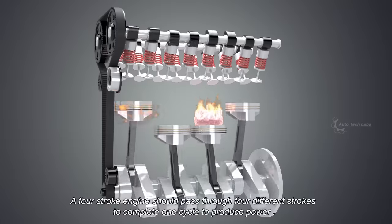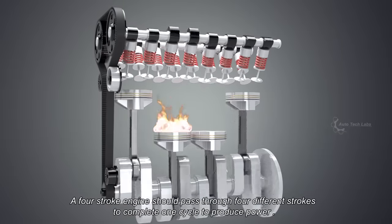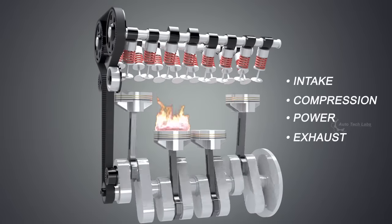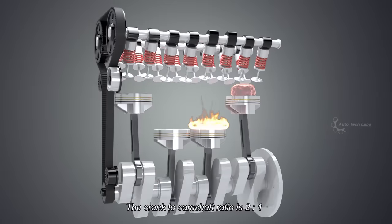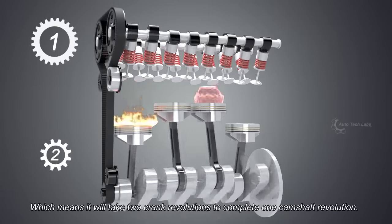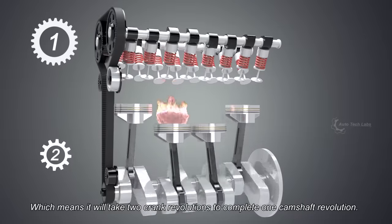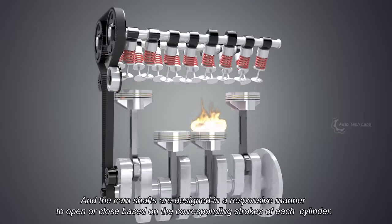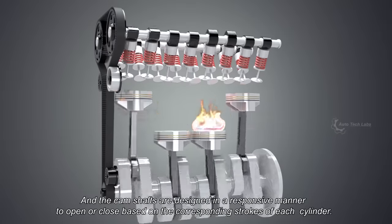A 4-stroke engine should pass through 4 different strokes to complete 1 cycle to produce power. They are intake, compression, power, and exhaust stroke. The crank to camshaft ratio is 2 to 1, which means it will take 2 crank revolutions to complete 1 camshaft revolution. And the camshafts are designed in a responsive manner to open or close based on the corresponding strokes of each cylinder.